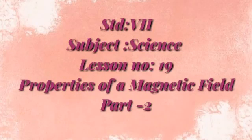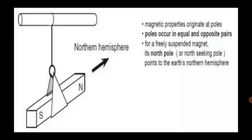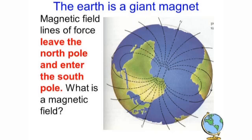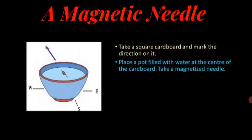Standard 7, Subject Science, Lesson Number 19: Properties of a Magnetic Field, Part 2. In our previous video, we studied characteristics of magnets, single touch method, double touch method, and Earth as a gigantic magnet.